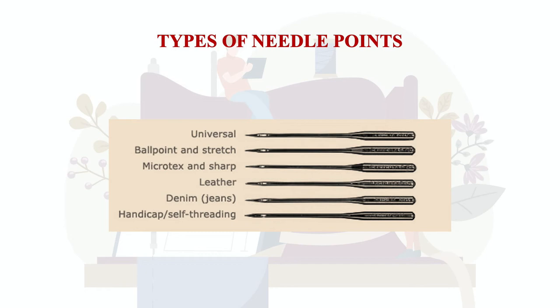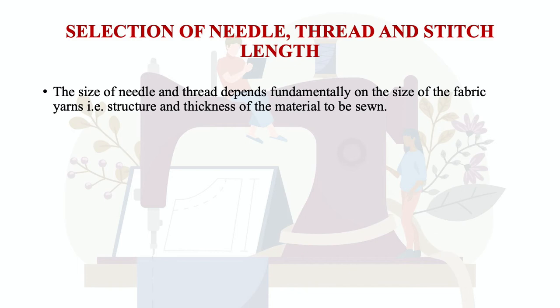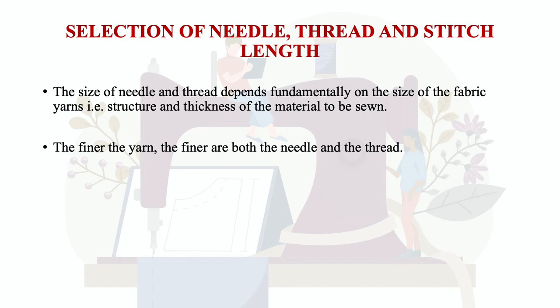We can use the needle type according to the fabric we are working with. When selecting needle, thread, and stitch length, all depend on the type of fabric used for the garment construction. The size of the needle and thread depends fundamentally on the size of the fabric yarn — that is, the structure and thickness of the material to be sewn, whether it is lightweight, heavy weight, or medium weight.